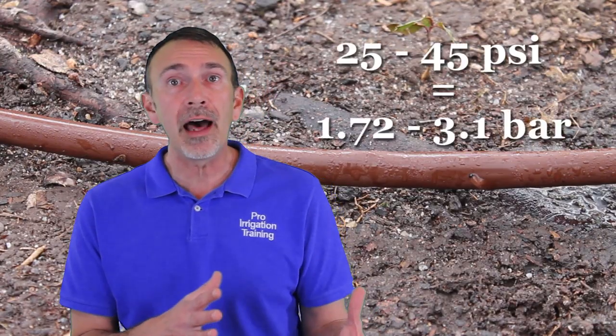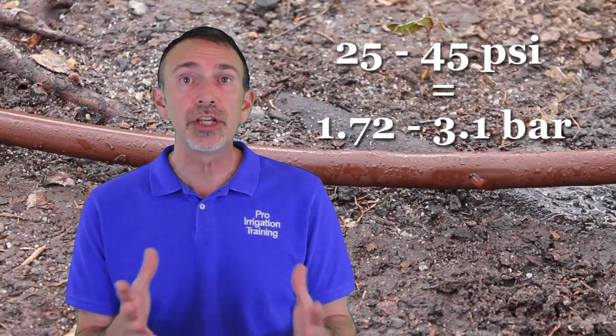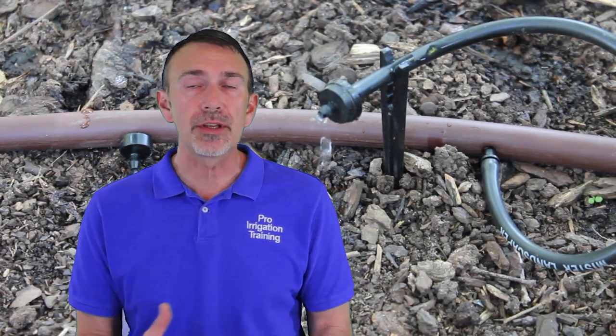When it comes to pressure regulation you'll find somewhere between 25 PSI to 45 PSI is the range. Generally that's what you'll find in the products and one of the reasons that we really need pressure regulation in drip irrigation goes with the style that uses solid drip tubing that we insert drip emitters into.